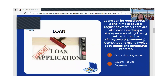Loans can be repaid through a one-time or several regular payments. There are also cases involving a single or several debts being settled through single or several payments, and computations may involve both simple and compound interest. An example of several regular payments would be weekly payments, like those from ASA Card or other foundations that provide loans to specific households.